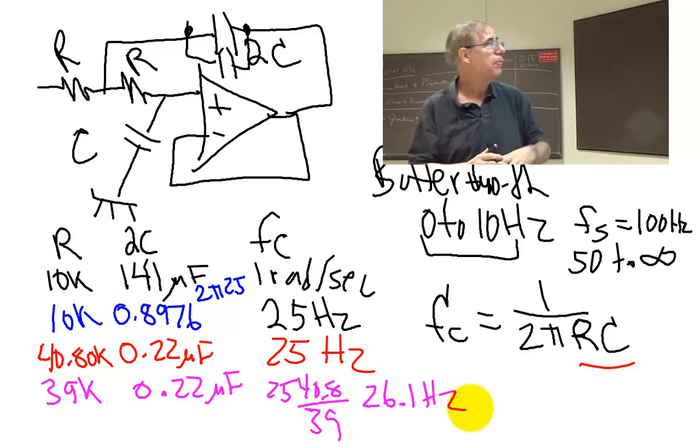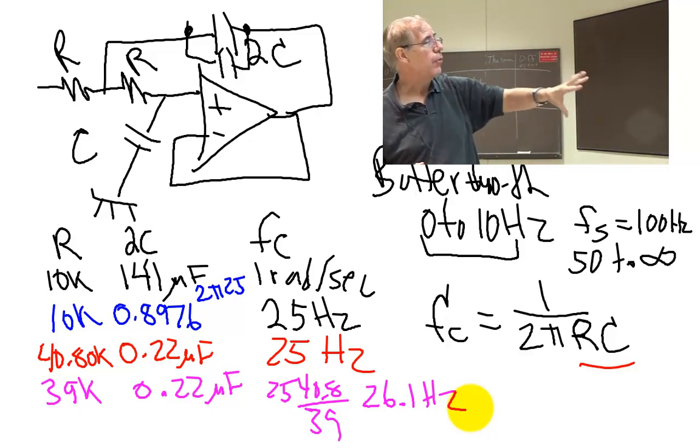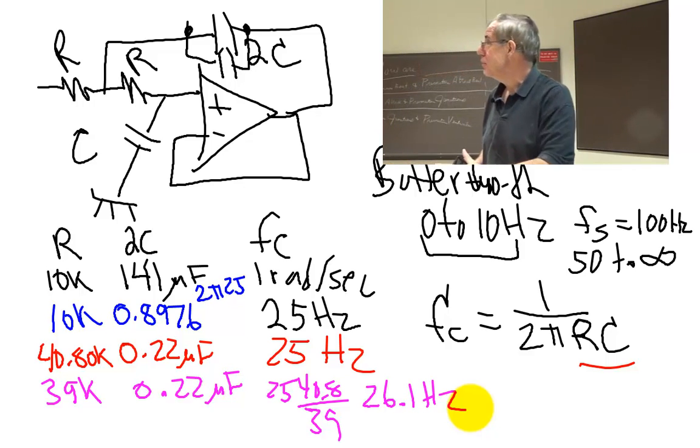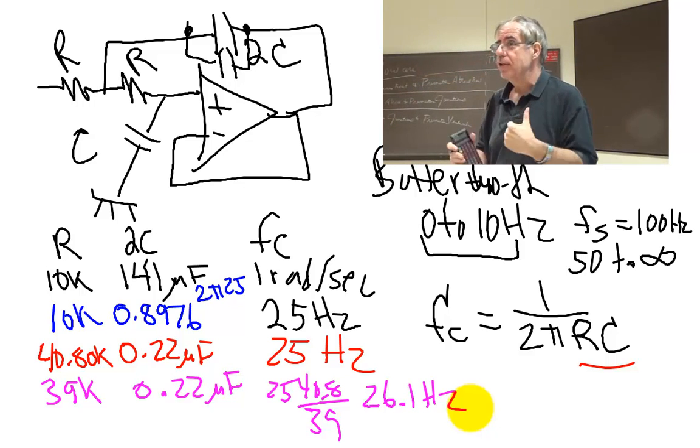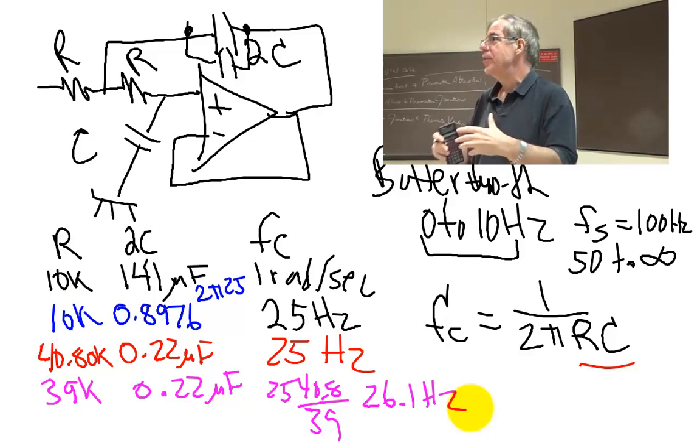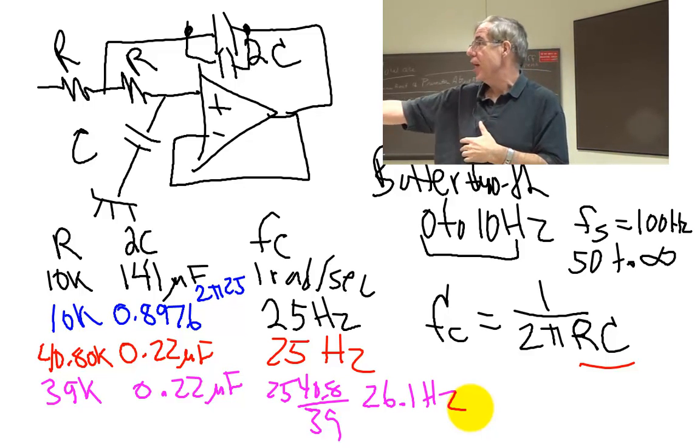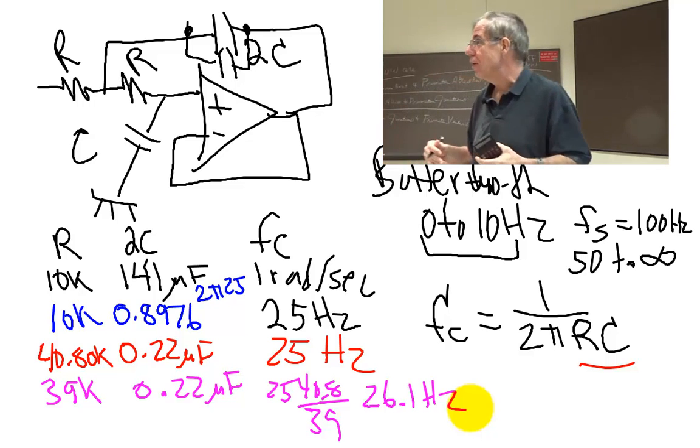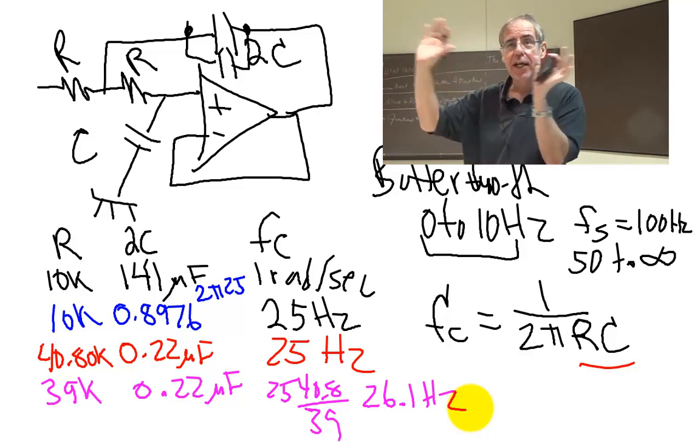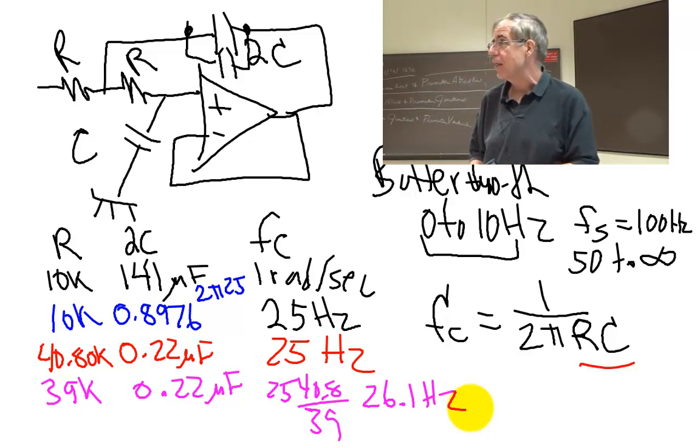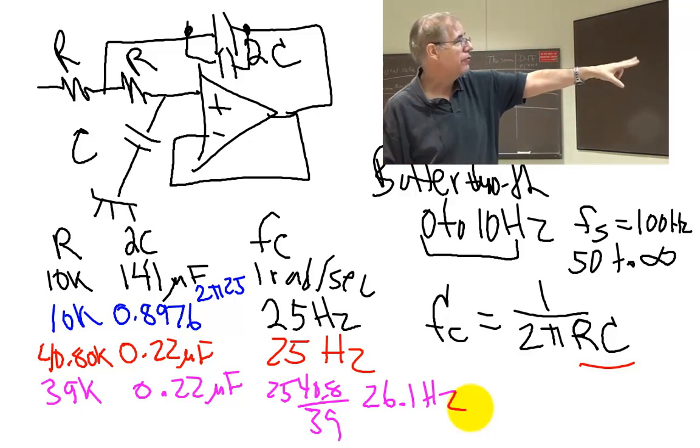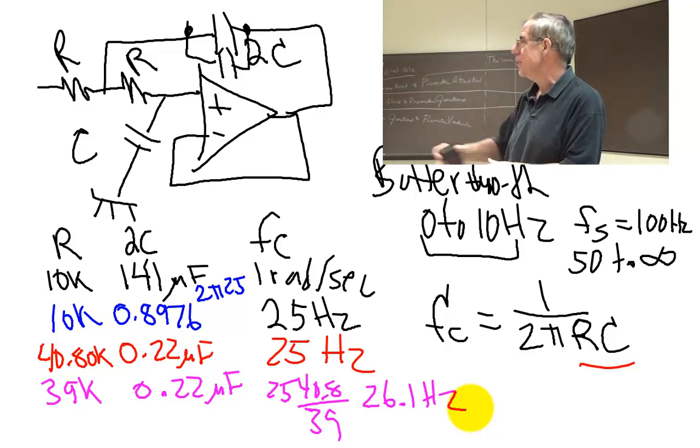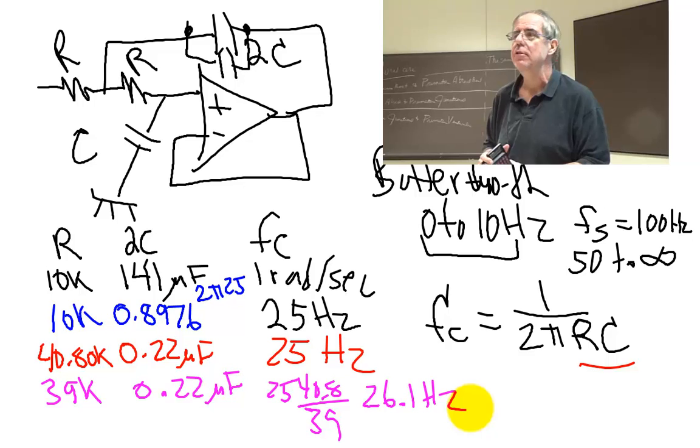And I would contend for the purpose of 445L where I want to pass 0 to 10, I want to reject 50 to a million, a billion, that these two filters are identical in their ability to pass the signals of interest and reject the signals. So unless you're doing RF and you got to get the FCC off your back, it probably doesn't matter whether your filter's 25 hertz or 26 hertz. So this is the design process that just takes a couple of calculations.